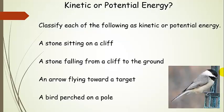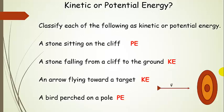Look at each one of these situations and decide whether it is kinetic energy or potential energy being described. A stone sitting on a cliff — high above the ground, just sitting there — that's potential energy. But if we kick it off the edge, it falls from the cliff to the ground, and that's kinetic energy. It's actually converting potential energy into kinetic energy as it goes to the ground. An arrow flying toward a target is kinetic energy — it's in motion. And a bird perched on a pole — that's potential energy; it's just sitting there.